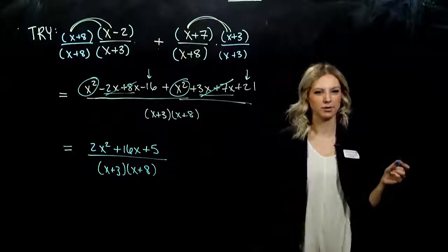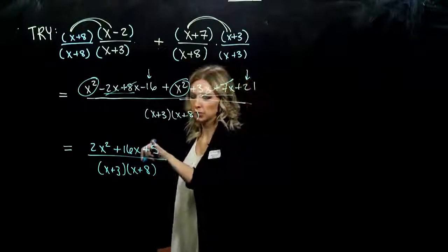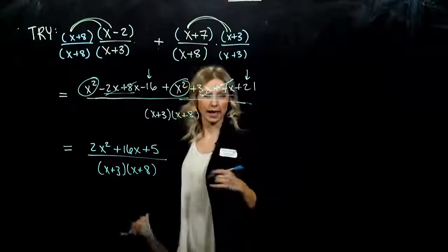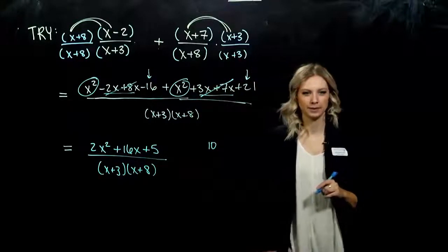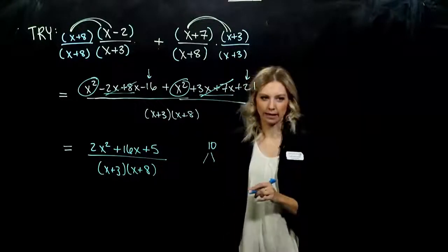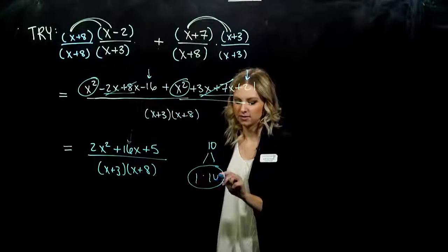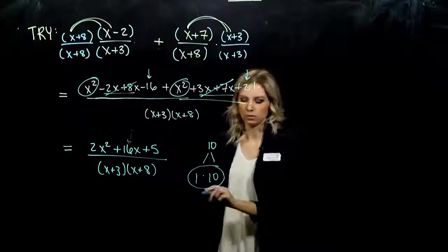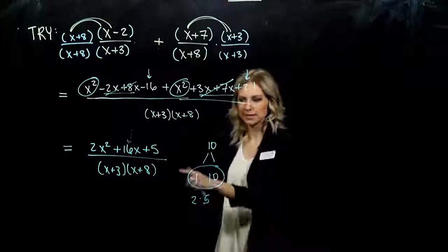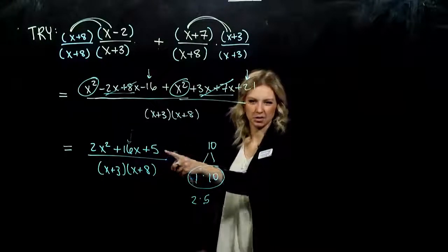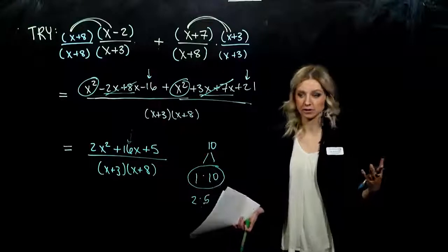Are we done? Let's try to factor the numerator a bit further using the AC method. My a-value is 2 and c-value is 5, so a times c equals 10. Can I break up 10 in any way so the factors add to positive 16? If I try 1 and 10, does that add to 16? No. 2 and 5 are my only other options — they multiply to give 10, but do they add to 16? No. So this tells me it's not going to factor nicely; we don't have the methods yet. We're all done — we can't factor the numerator, so there are no common factors to cancel.